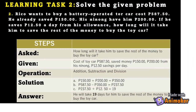Number 2: Rico wants to buy a battery-operated toy car that costs 587.50 pesos. He already saved 150.00 pesos and his ninong gave him 200.00 pesos. If he saves 12.50 pesos a day from his allowance, how long will it take him to save the rest of the money to buy the toy car?